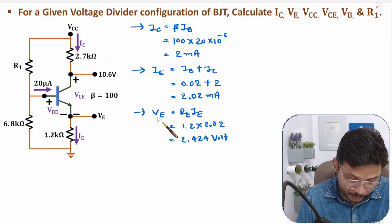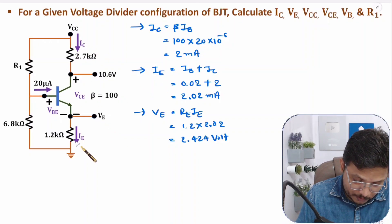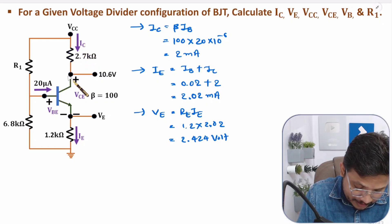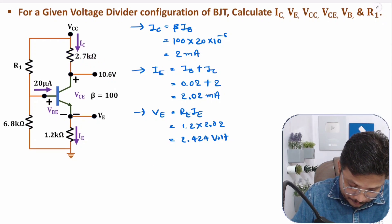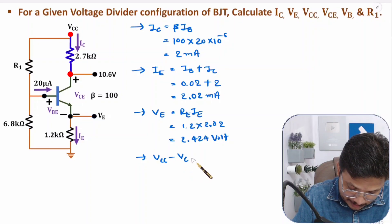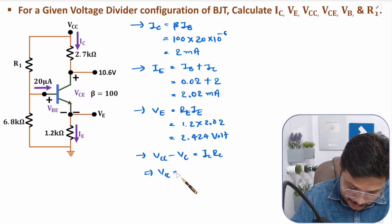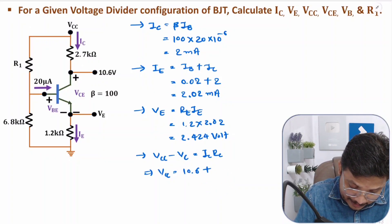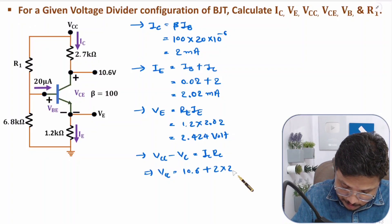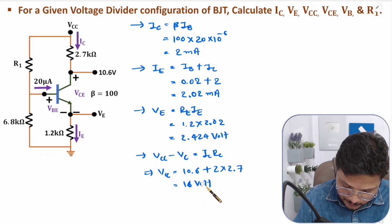Now we have VE. We have base current, collector current, and emitter current, so we can find VCC. The collector current and collector voltage are known. VCC minus VC equals IC times RC. VCC equals 10.6 plus IC times RC, which is 2 times 2.7, giving 10.6 plus 5.4 equals 16 volts.